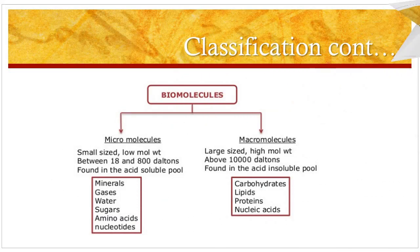Now based on molecular weight, biomolecules are classified into two types: micromolecules and macromolecules. Micromolecules are those biomolecules which are small in size, having low molecular weight between 18 to 800 daltons, and are found in the acid-soluble pool — that is minerals, gases, water, sugars, amino acids and nucleotides.